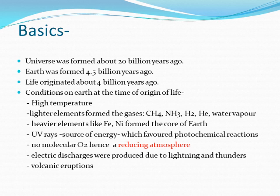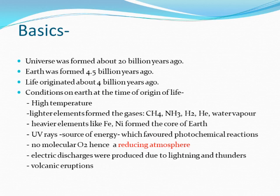At the time of origin, there were high temperatures — the earth was very hot. The lighter elements formed gases such as methane, ammonia, hydrogen, and helium. Water was present only in the form of vapor because of the high temperature. The heavy elements like iron and nickel formed the core of the earth. Ultraviolet rays were the main source of energy at that time and favored photochemical reactions.